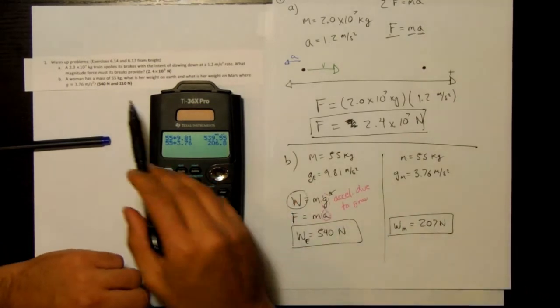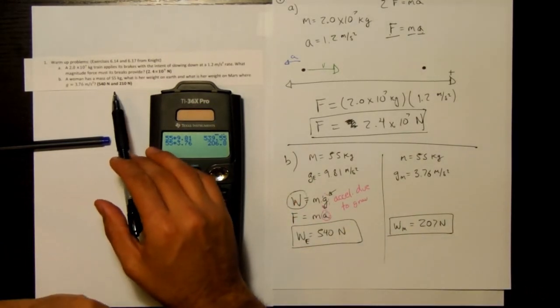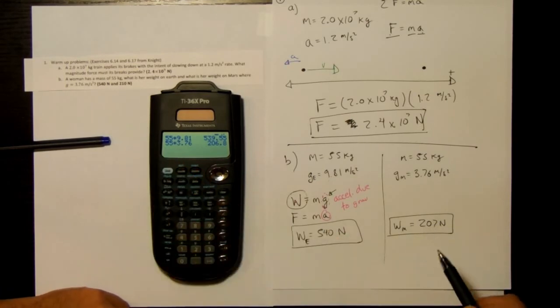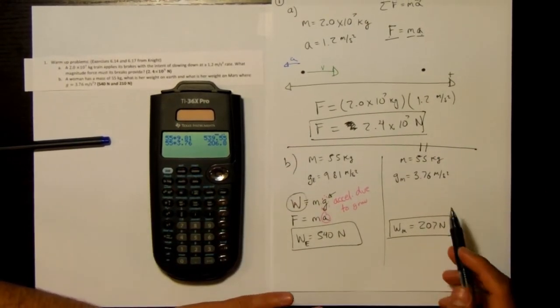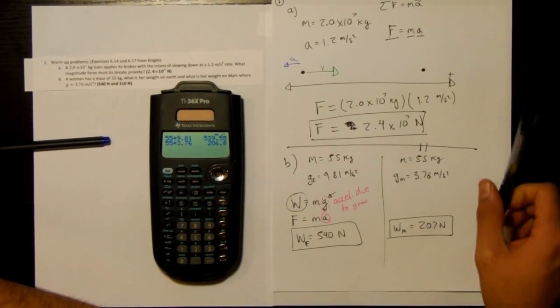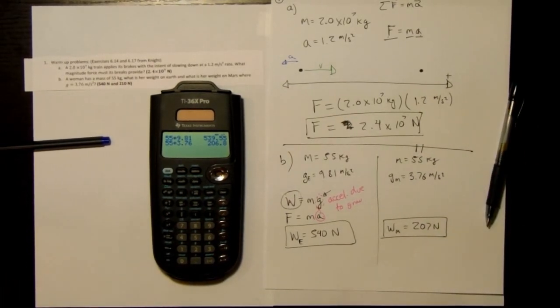And then 210 is what they have in the solutions. So that makes sense also because if you have two significant figures over here, then you can round it to two significant figures. All right, and that's it.